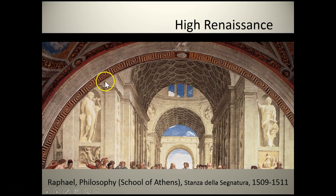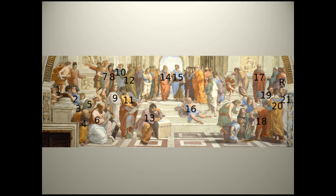We also see references to pagan gods and goddesses. We have the depiction of the god Apollo and then Minerva placed in architectural niches. This very much alludes back to classical Greco-Roman concepts and ideas, which is highly unusual in a religious painting like this. All these different philosophers, scientists, and mathematicians are depicted throughout the composition.